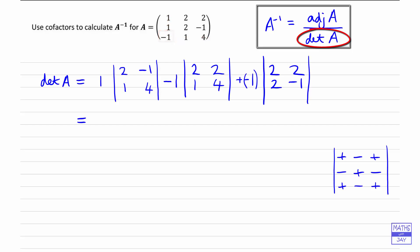So fairly straightforward to work out. We've now got 2 times 4 subtract negative 1 times 1. And then we're subtracting 2 times 4, minus 1 times 2. And then subtracting 2 times negative 1, subtract 2 times 2, which is 4.